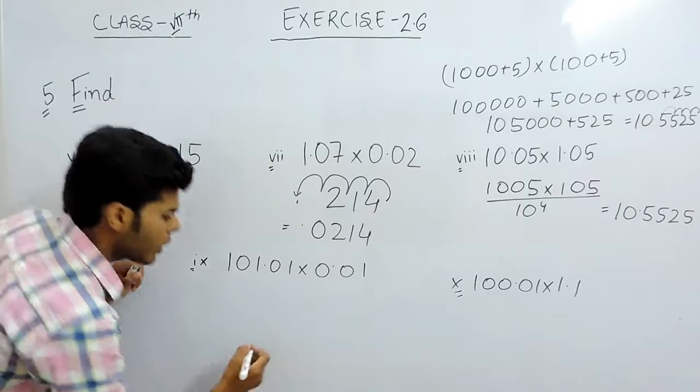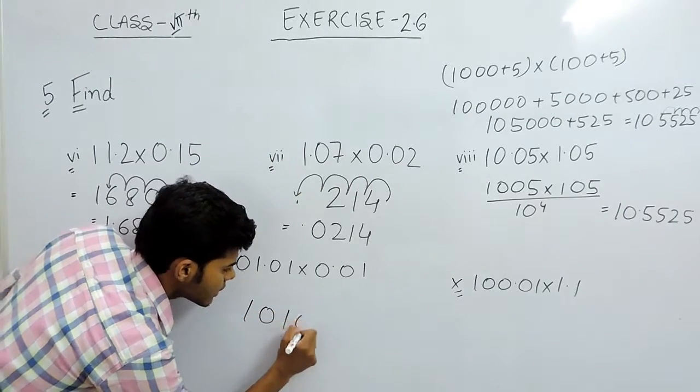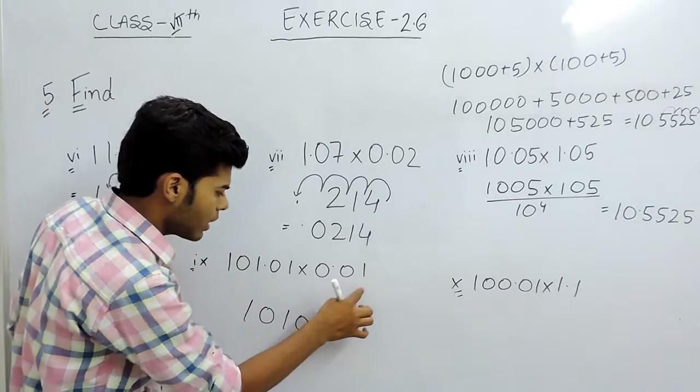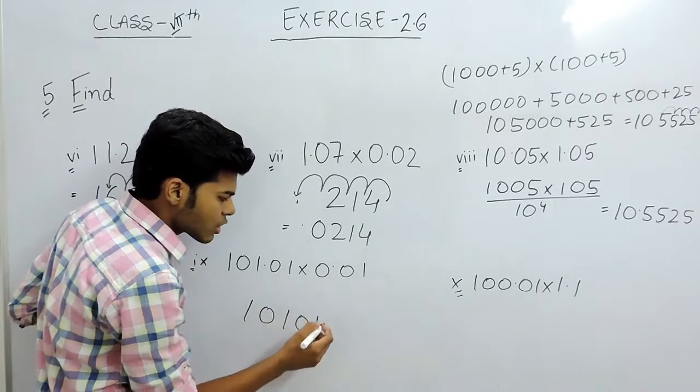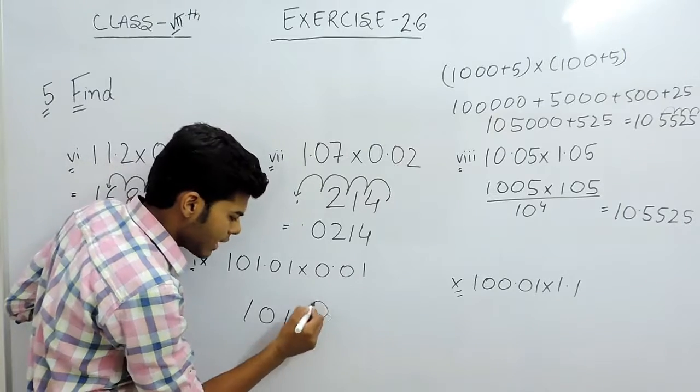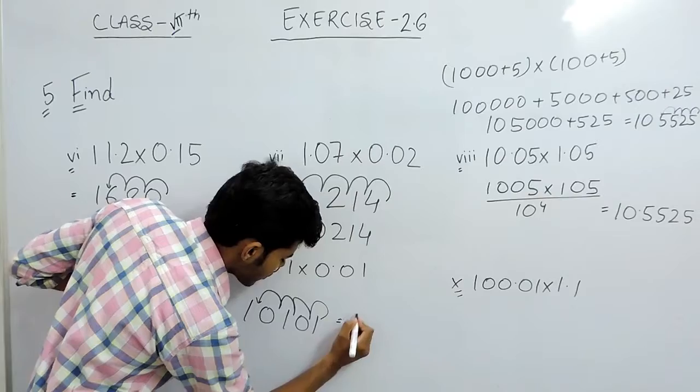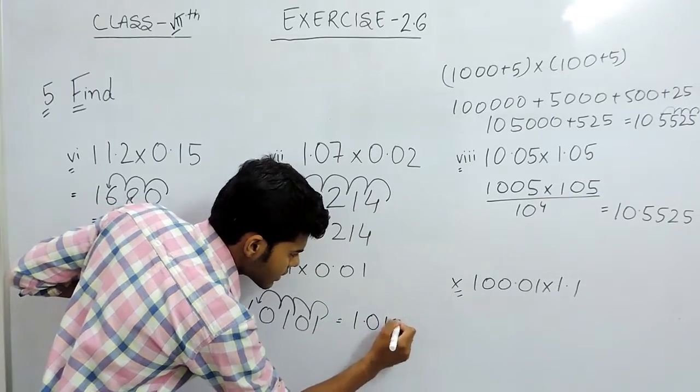Now in this one, it will be 10101. When 10101 is multiplied with 1, there are 4 decimal places, so we will shift the decimal towards the left: 1, 2, 3, and 4. So the answer will be 1.0101.